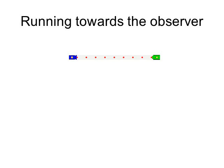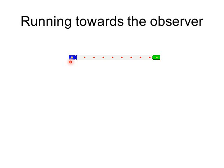A good analogy for the Doppler effect: imagine a paintball war. Mr. T has a fully automatic green paintball gun and is shooting paintballs at Ani. A flashing light fires every time a paintball is fired, and another flashes every time it hits Ani. When both are standing still, the frequency of firing equals the frequency of hits — the source frequency equals the observed frequency.